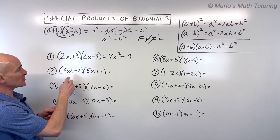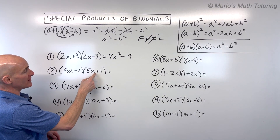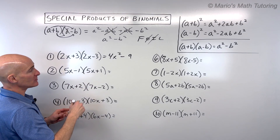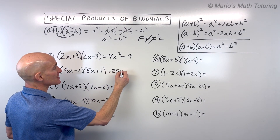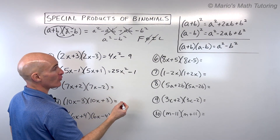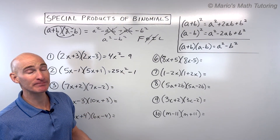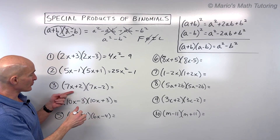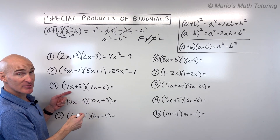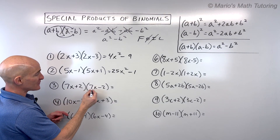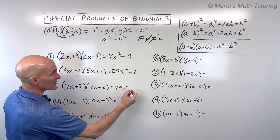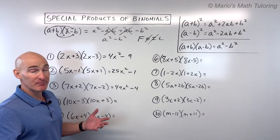Number two: 5x minus 1 and 5x plus 1 — same terms, one minus and one plus. First times first: 5x times 5x is 25x squared. Last times last: negative 1 times positive 1 is negative 1. See how quick it is? Number three: 7x plus 2 and 7x minus 2 — adding in one, subtracting in the other. First times first gives 49x squared. Last times last: positive 2 times negative 2 is negative 4.